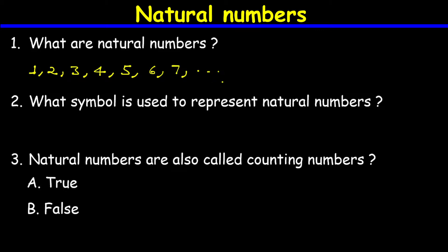Because natural numbers are infinite, the answer to question one is 1, 2, 3, 4, 5, 6, 7, and so on. Question number two: what symbol is used to represent natural numbers? The symbol used to represent natural numbers is the capital letter N. The set of natural numbers is represented by capital letter N, so the answer is N.